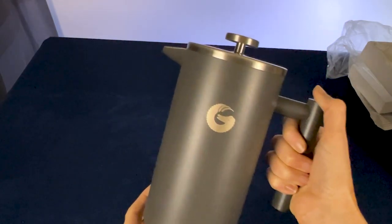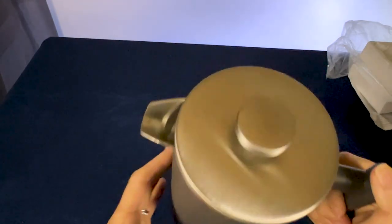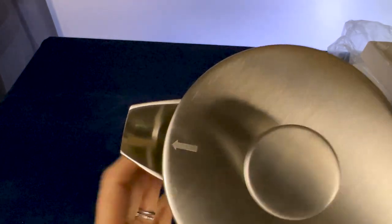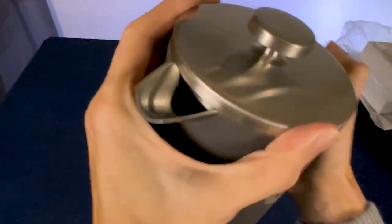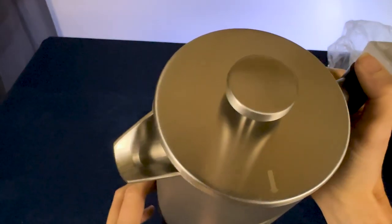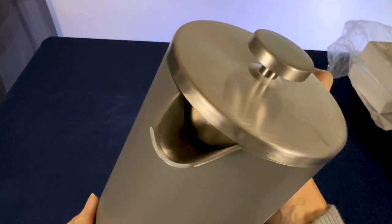Now, let's take a closer look at the French press itself. First of all, I really like this little arrow right here because it tells you when the opening is there, so you're good to pour your coffee out. If you're not lined up, you're not going to be able to pour.